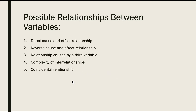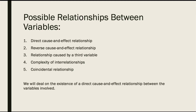Fifth, the relationship may be coincidental. For example, there may be a significant relationship between the increase in the number of people who are exercising and the increase in the number of people who are committing crimes, but common sense tells us that any relationship between these two variables is really due to coincidence. In this batch of videos, we will deal with the existence of direct cause and effect relationships between the variables involved — we will focus on number one.